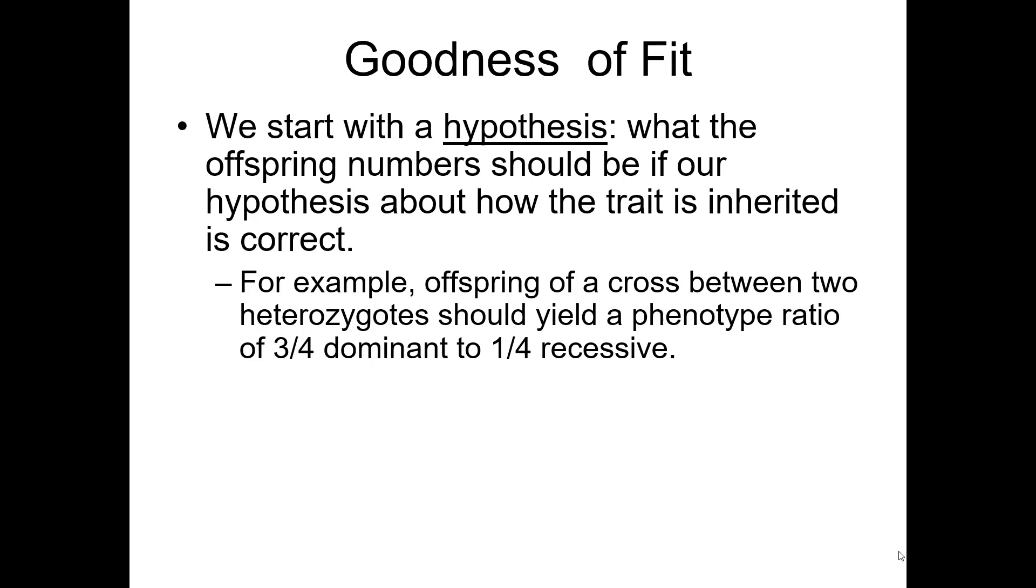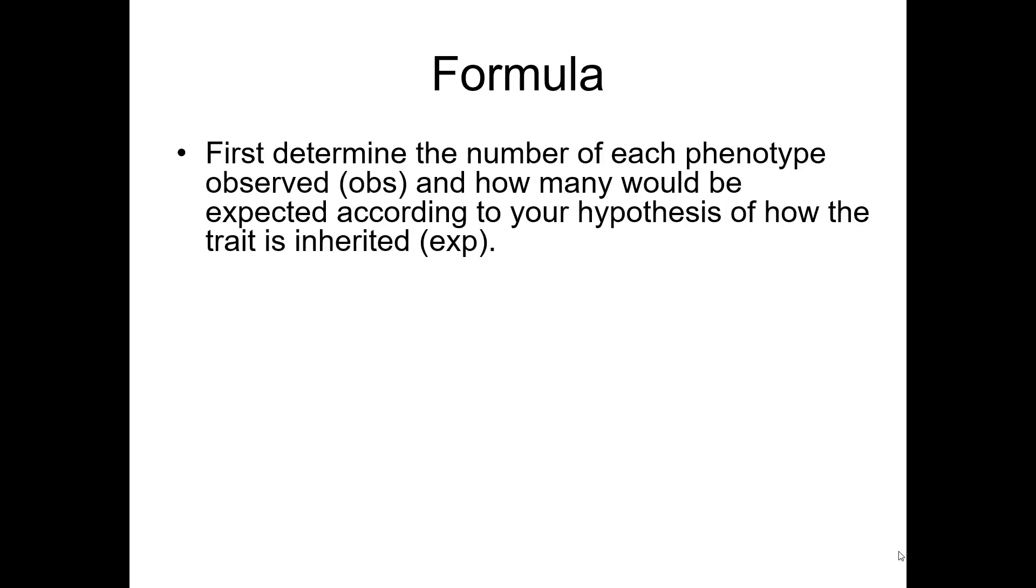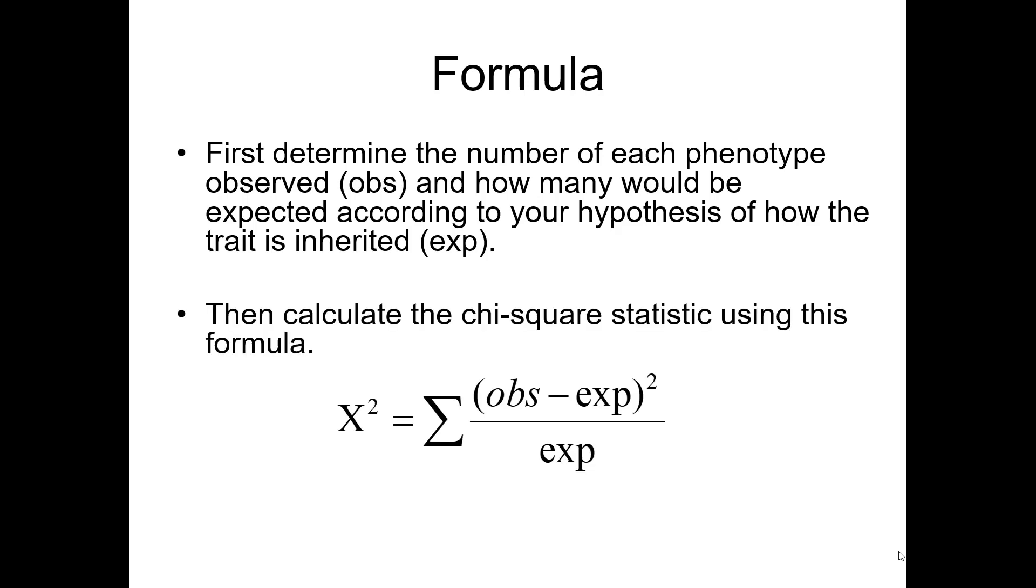So if you start with a hypothesis of what your offspring number should be if your hypothesis about how the trait is inherited is correct. For example, let's say you have the offspring of a cross between two heterozygotes. That should yield a phenotype ratio of three-fourths dominant to one-fourth recessive. So first, you need to determine the number of each phenotype observed. You collect the data. Then, how many would be expected according to your hypothesis of how the trait is inherited? And then you calculate a chi-square number using this formula.